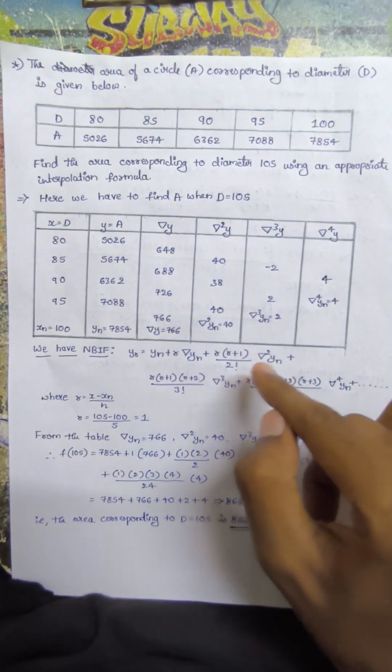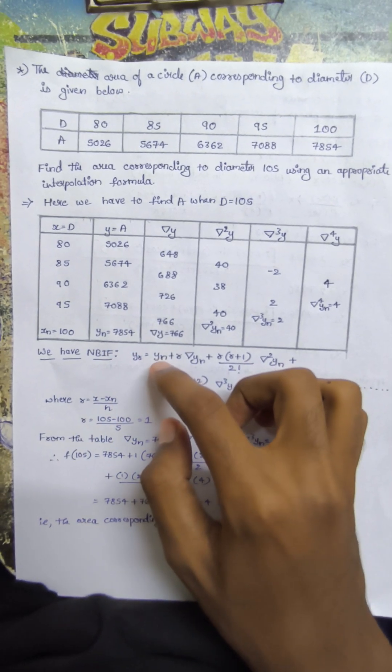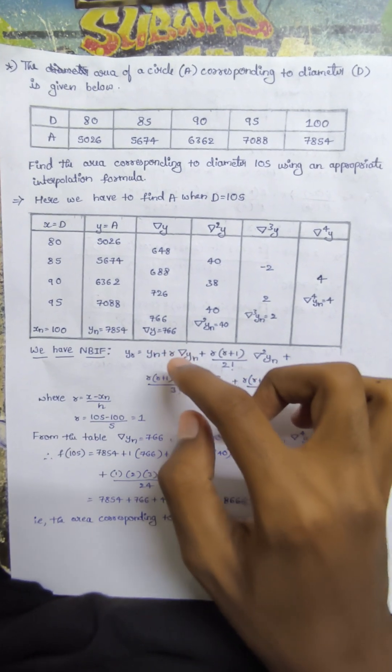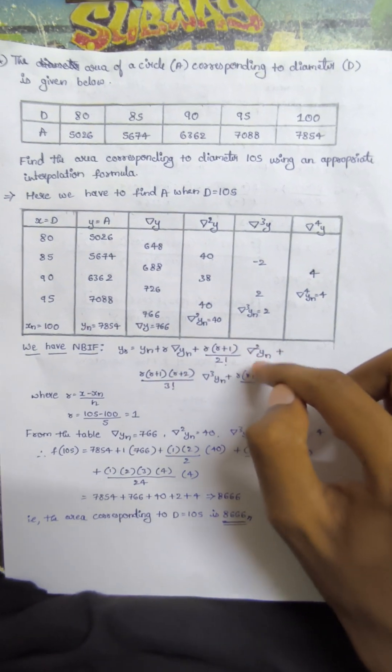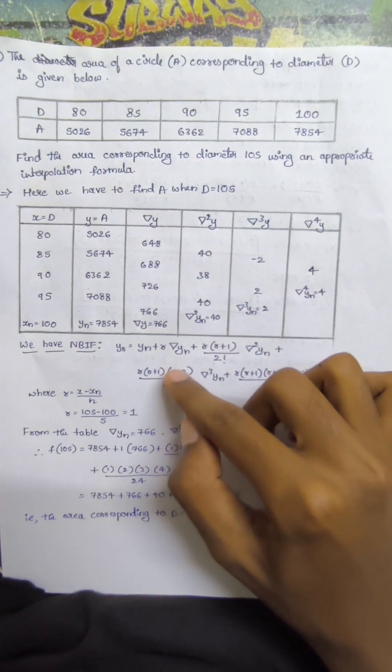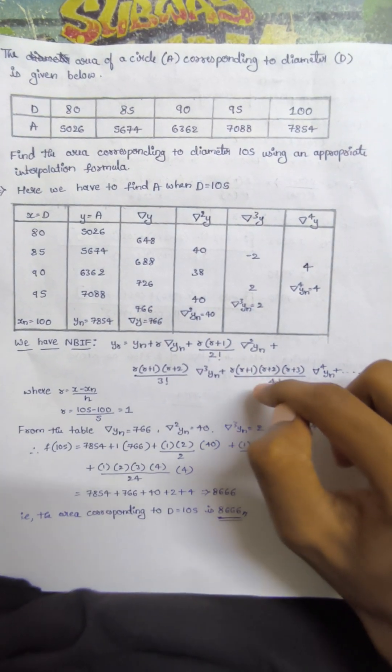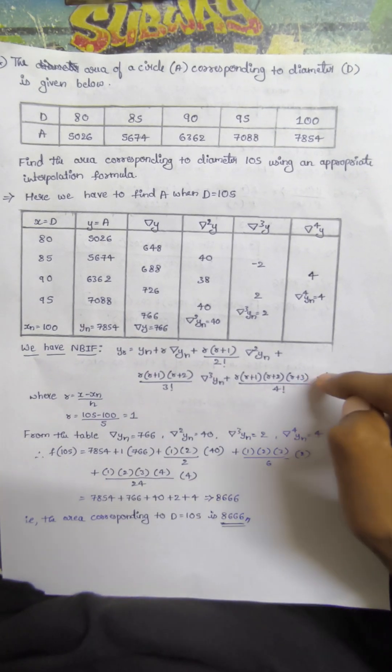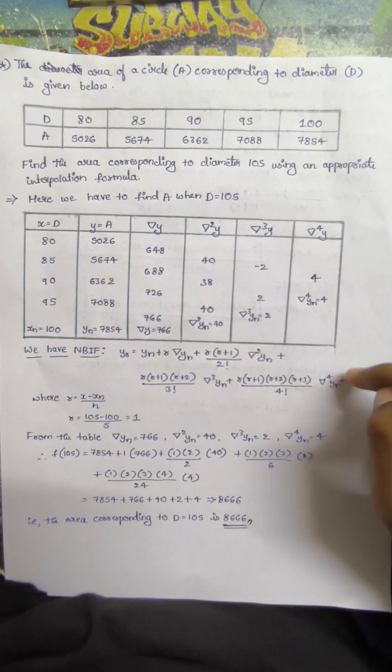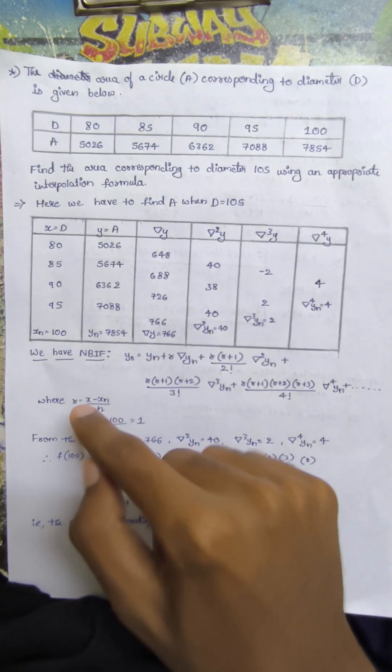The Newton forward interpolation formula is: f(r) = yn + r·Δyn + [r(r+1)/2!]·Δ²yn + [r(r+1)(r+2)/3!]·Δ³yn + [r(r+1)(r+2)(r+3)/4!]·Δ⁴yn and so on, where r = (x - xn)/h.